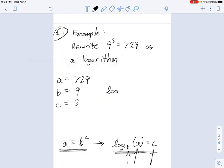So we would just say log. And what goes next? That's the b. So it's going to be base nine. And the argument is 729. And the exponent is three. Okay. So this is how you would rewrite the exponential function or exponential equation nine cubed equals 729 as a logarithm.